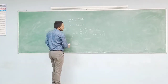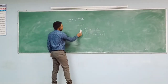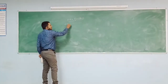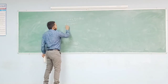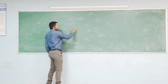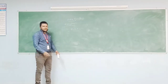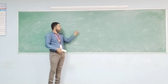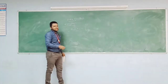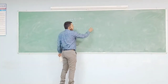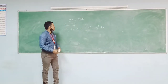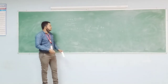Now let's look at examples of beta functions. The first example is beta of 4 comma 6. Here the value of m is 4 and n is 6. Beta of 4 comma 6 equals the integration of 0 to 1 of x power 3 into 1 minus x whole power 5 dx.